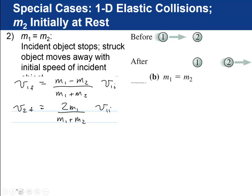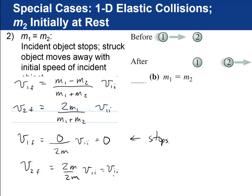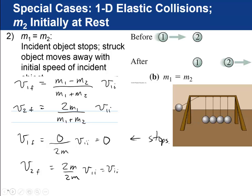The second special case is m1 equals m2. In that case, v1 final is the mass minus the mass, so 0 over 2m. That means that object 1 will just stop. And v2 will be 2m over 2m, so just v initial. It will pick up the same velocity that v1 originally had. That's like Newton's cradle.